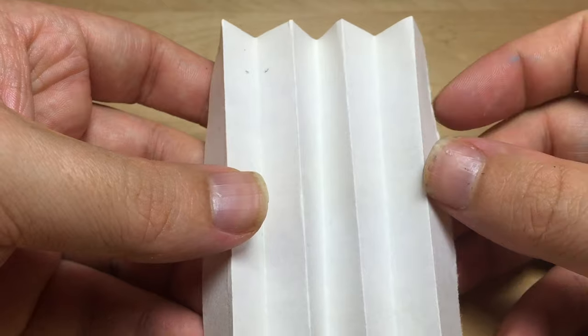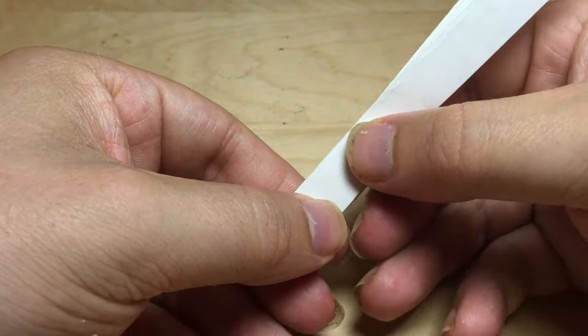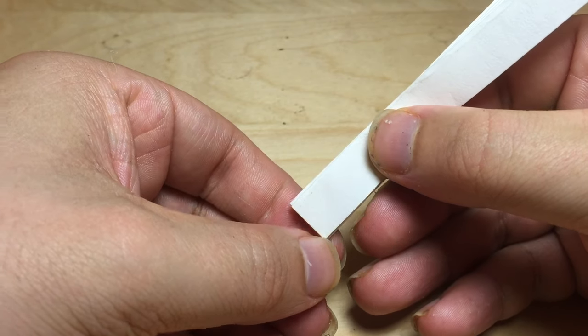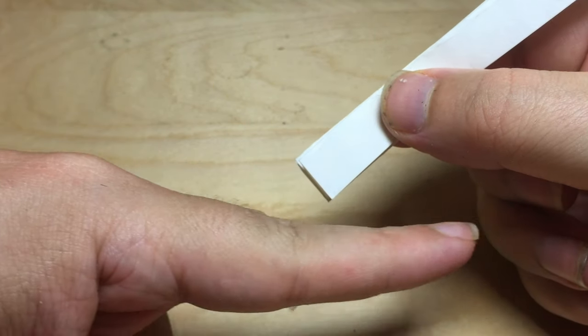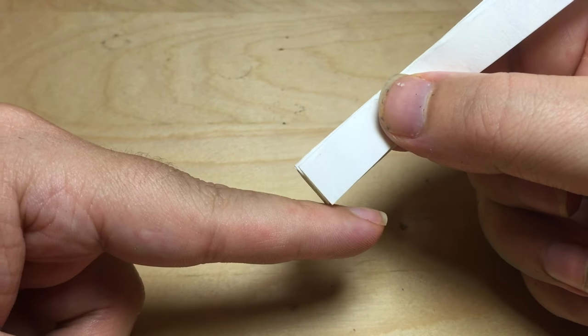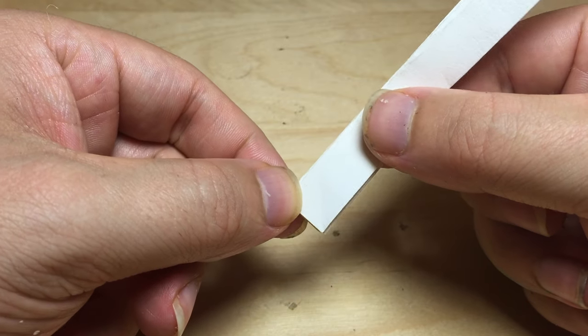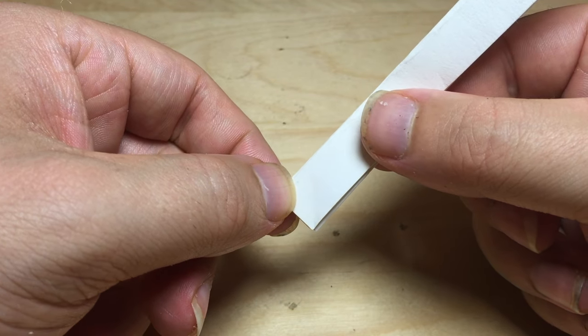We're now going to take these eight pleats and make an equilateral triangle. So there's an imaginary line which comes down by the bottom of this point and we're going to try and find 60 degree angles.